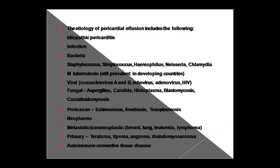Malignancy can also cause pericardial effusion through metastasis or paraneoplastic syndromes. Primary cancers include breast cancer, lung cancer, leukemia, and lymphoma that have spread to the heart. Primary pericardial tumors include teratoma — a form of cancer arising in organs with more than one germ layer — as well as lipoma, angioma, and rhabdomyosarcoma.